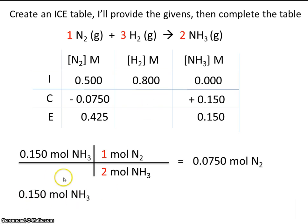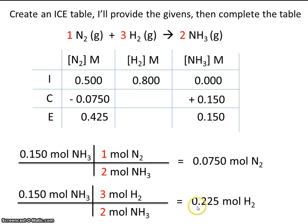So we're reacting 0.15 moles of ammonia. We use the coefficients from the balanced equation, the relationship is 2 to 3, to discover that we would react 0.225 moles of hydrogen. So if we start with 0.8, we decrease it by 0.225. That means our equilibrium concentration is 0.575.